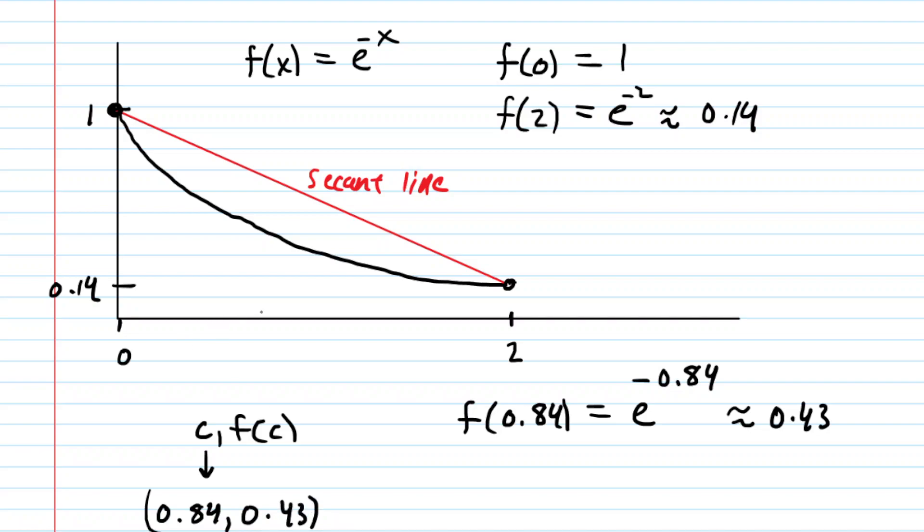This is not to scale, so we'll kind of estimate it. 0.84 might be about right there. 0.43 would be about right there. And if we make a tangent line at that point, so if we draw a tangent line through that point, tangent to the curve.